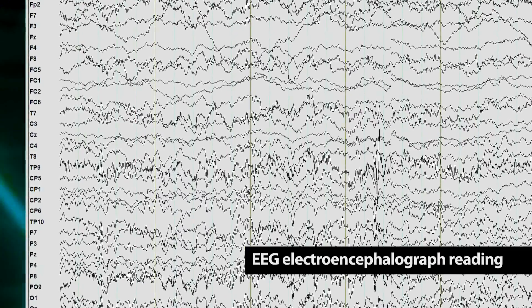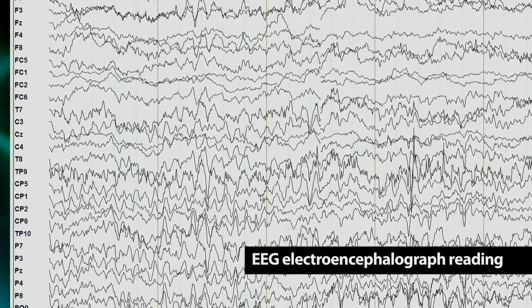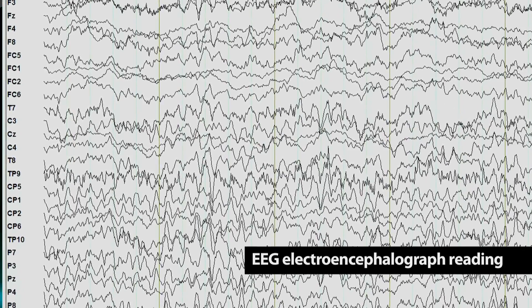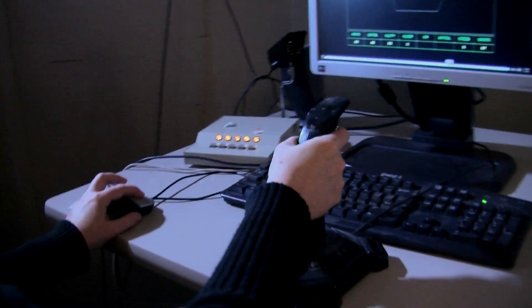So we get their brain activity when they're first learning to play the game, and then they play the game for 20 hours over the next month. And then we bring them back and we compare how much they improved during that training and then go back to the first set of brain activity and try to make some predictions.